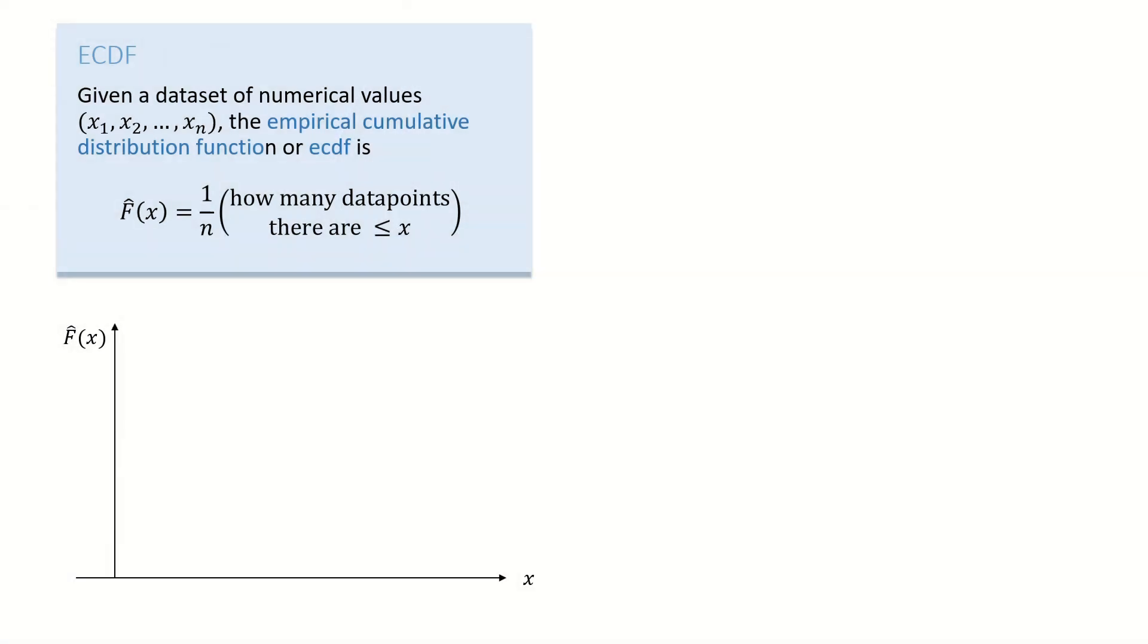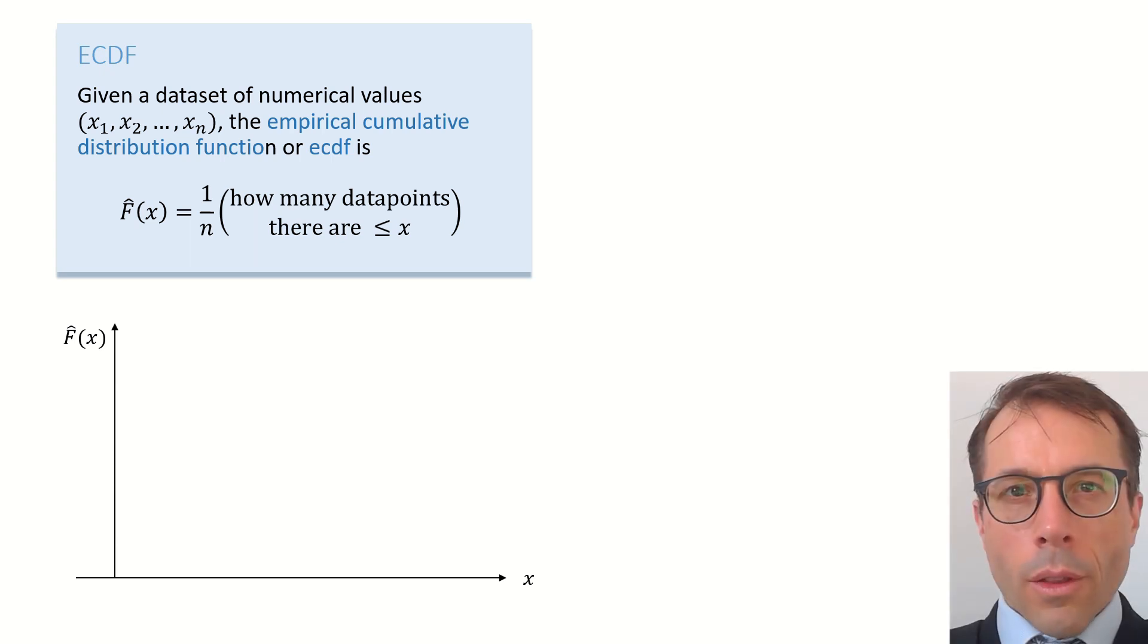Okay, enough of the waffle. Here is a definition. Pause the video and have a read. This function we've defined, f-hat of x. It's a function that accepts any floating point number x and returns a value in the range 0 to 1.